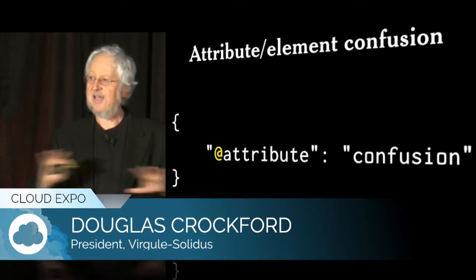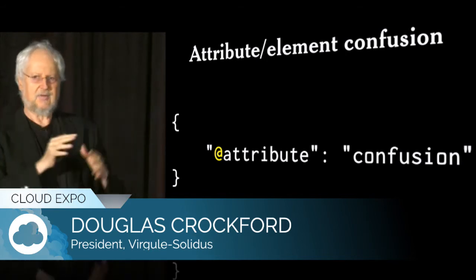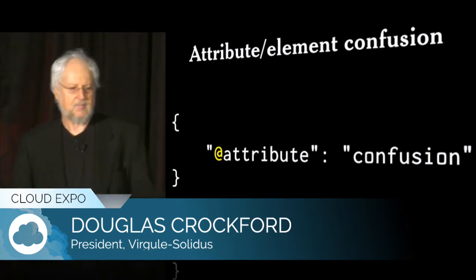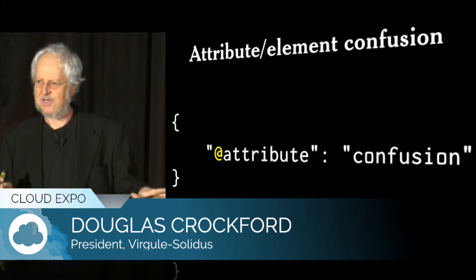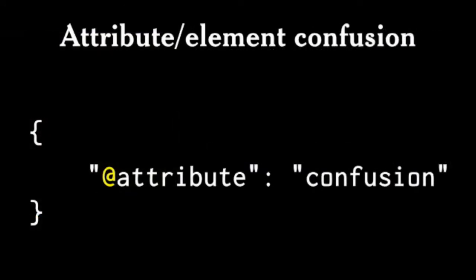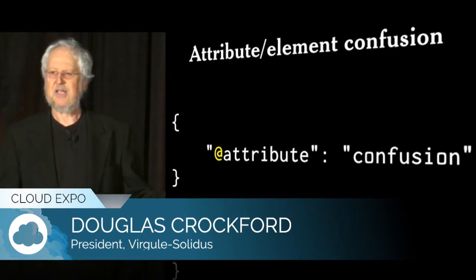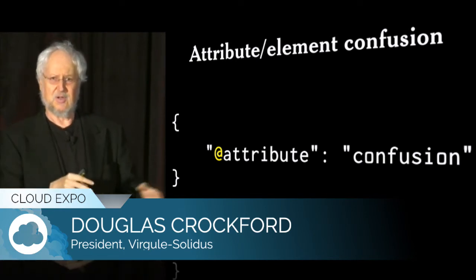Fortunately, JSON does not have that confusion, because it's just simple data structures. If it's a sequence, it's an array. If it's associated values, it's an object. That's it — it's really simple. But sometimes you'll see someone putting at signs in the names of their properties, because they're still thinking in XML and preserving that confusion in more modern systems. JSON doesn't care, and actually I don't care either. But it means they are fundamentally confused about what they're doing, and you probably want to send them to a re-education camp.